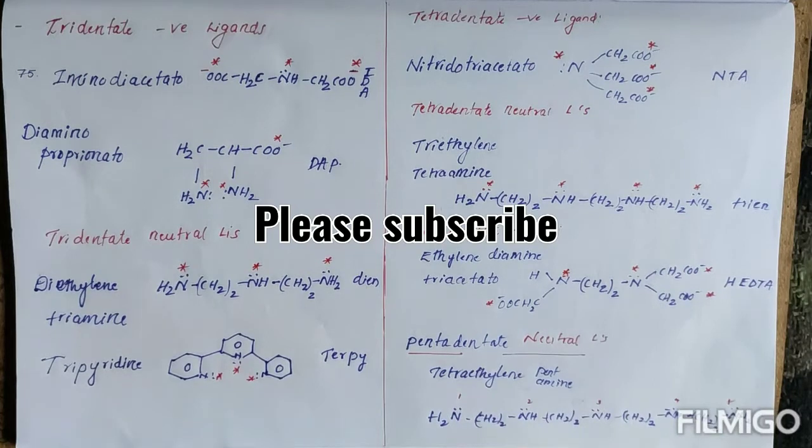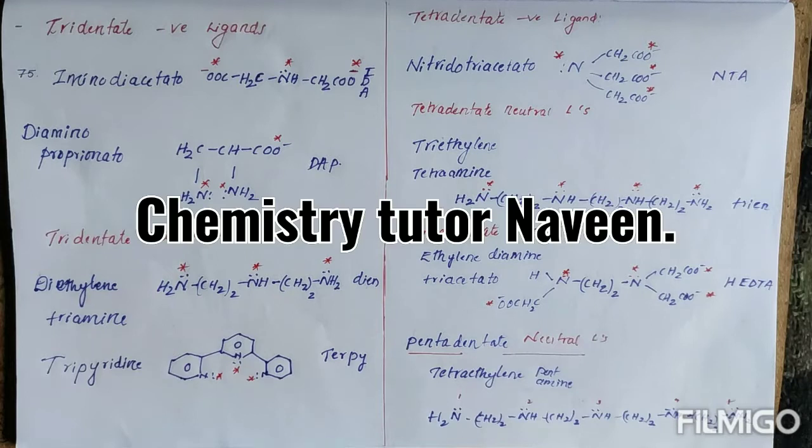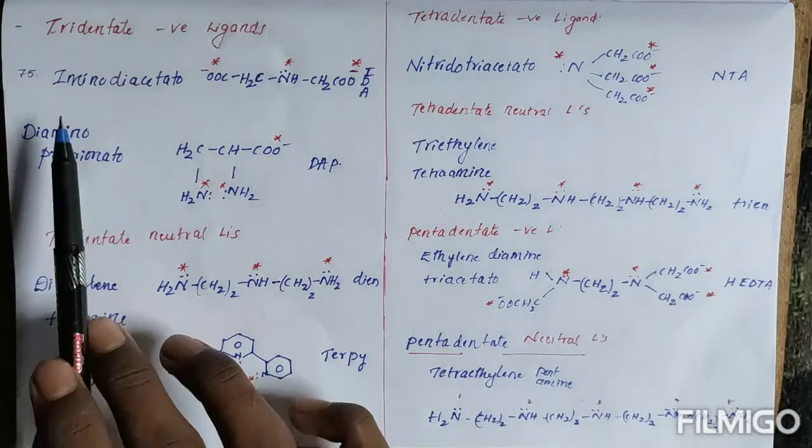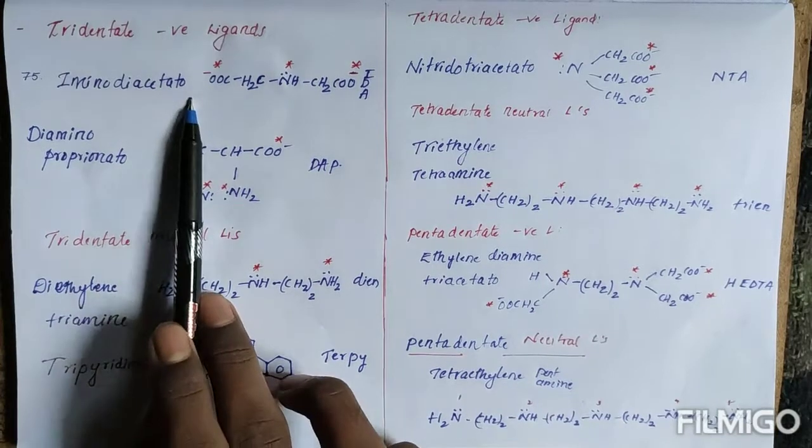Hi, hello everyone, welcome back to my channel. This is Naveen. So we have been learning ligands in coordination chemistry. We have seen monodentate and bidentate ligands, so let us see tridentate negative ligands today. Firstly, we have iminodiacetate.